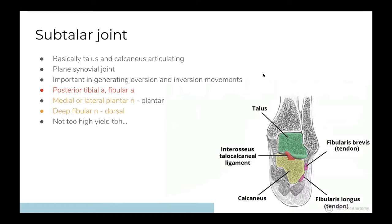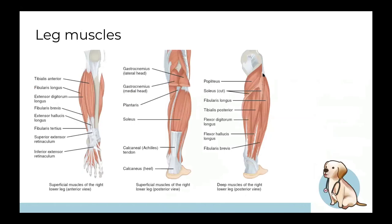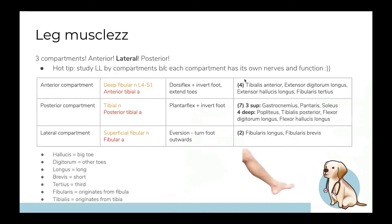The subtalar joint connects the talus to the calcaneus — not too high yield. Now let's move on to muscles. The leg muscles are divided into three compartments: anterior, posterior, and lateral — not to be confused with the medial compartment of the thigh. Study your muscles by compartment, as that makes anatomy much easier.